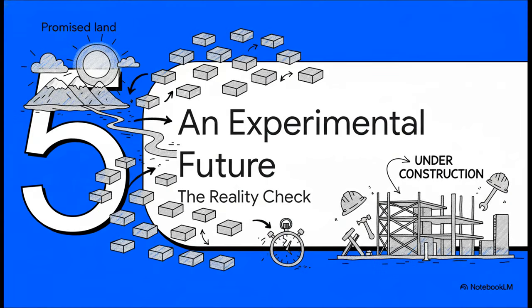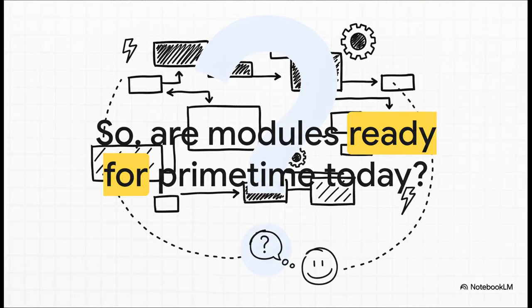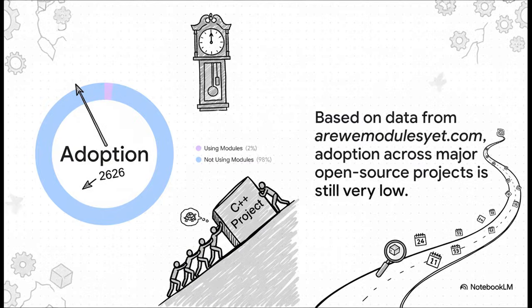So that's it. The promised land is here. We can all start using modules and our builds will be instantaneous. Problem solved forever, right? Well, not quite. The reality on the ground is that this amazing future is still very much under construction. And this brings us to the big crucial question that pretty much every C++ developer is asking right now. Can I, and maybe more importantly, should I use modules in my production project today? Well, if you look at the data, the answer is probably not.